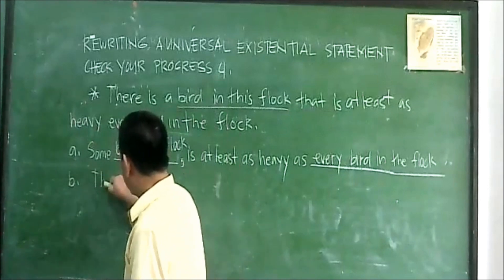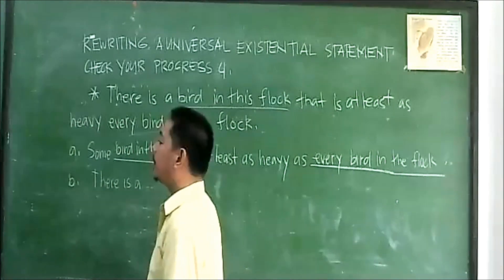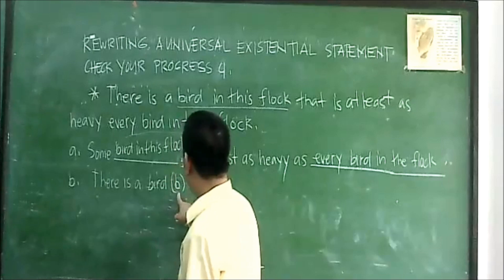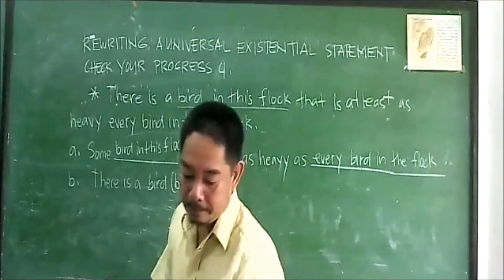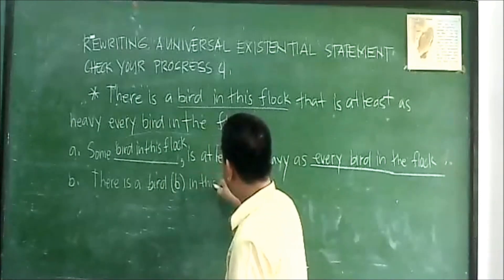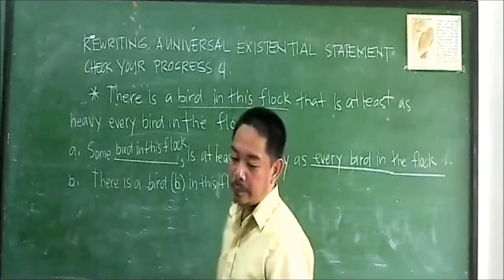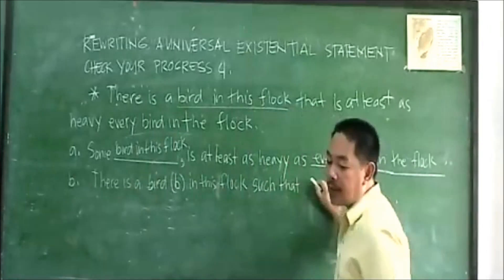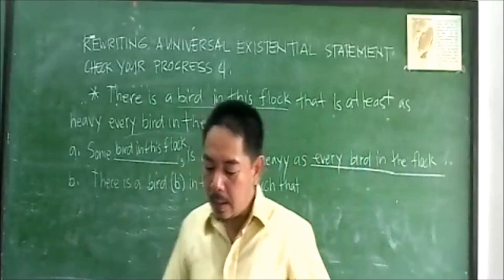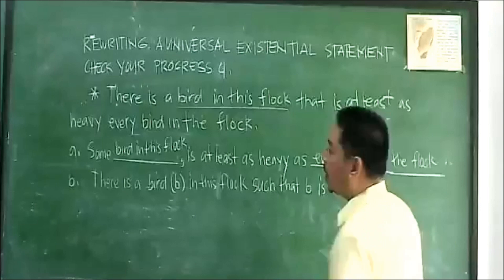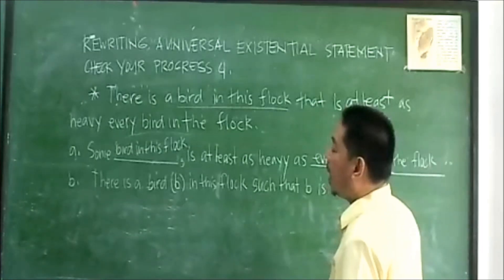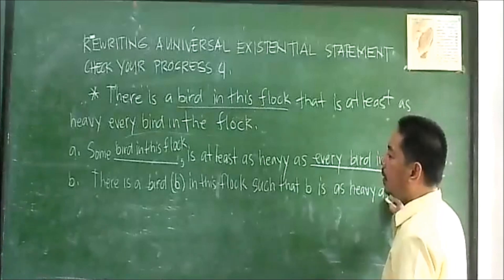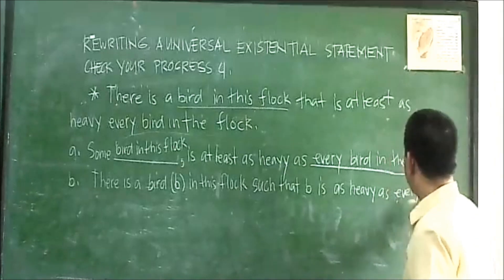There is a bird B in this flock, in this flock. E is blank — that bee is blank — at least as heavy as every bird in the flock.